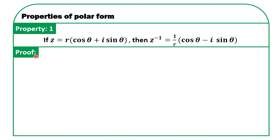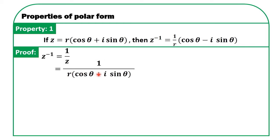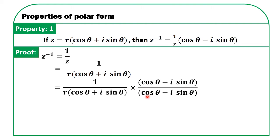Now let us see the proof for this. It is given that z = R(cos θ + i sin θ). So z⁻¹ = 1/z = 1/[R(cos θ + i sin θ)]. Multiplying by the conjugate (cos θ − i sin θ) over (cos θ − i sin θ), we get cos θ − i sin θ divided by R(cos θ + i sin θ)(cos θ − i sin θ).